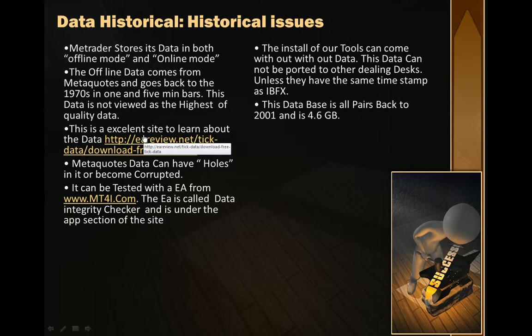MetaTrader stores data in both offline mode and online mode. Offline mode goes back to 1970 on five-minute bar charts. This data is not viewed as the highest quality — it's from MetaQuotes and can have holes in it, so it might not work correctly. There is an EA that will test for these holes.